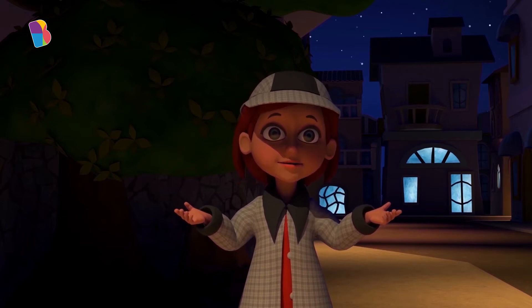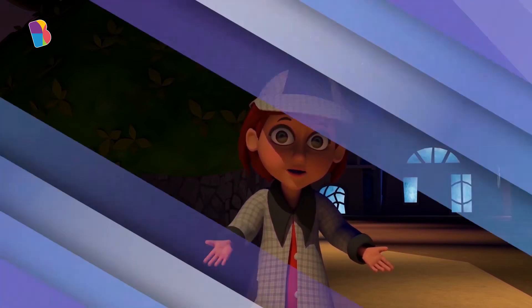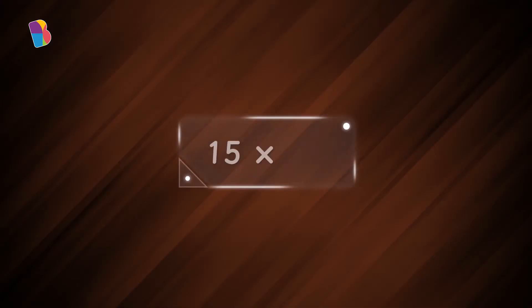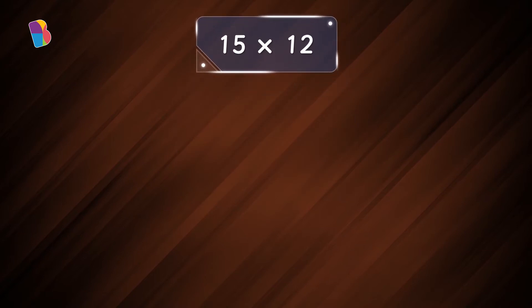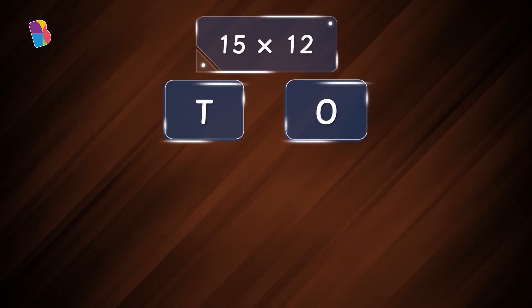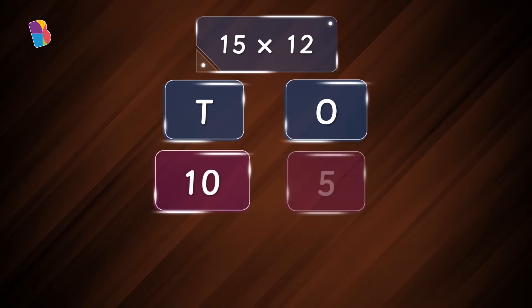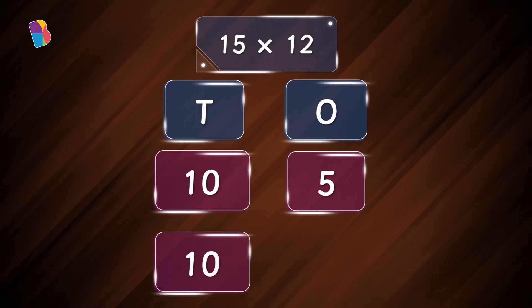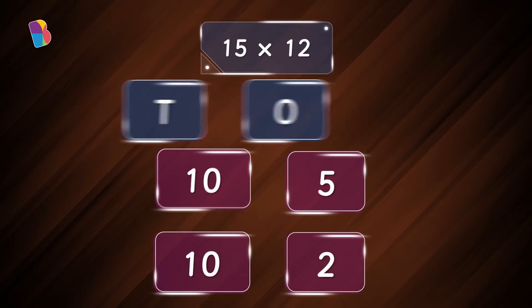Let me try to solve it with the area method of multiplication. First, let me decompose the numbers into tens and ones. So, fifteen can be written as one ten and five ones, and twelve can be written as one ten and two ones.